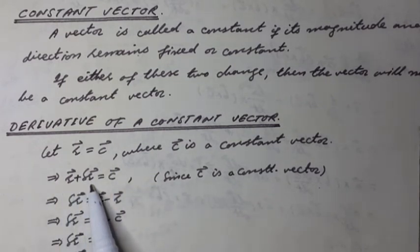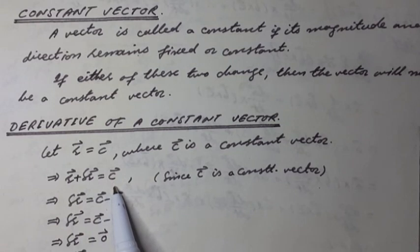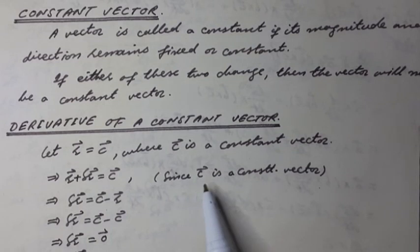Then R vector plus delta R vector is equal to C vector plus delta C vector is equal to 0, because C vector is a constant vector. So,